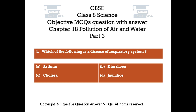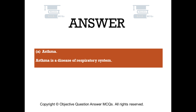Question number 4: Which of the following is a disease of the respiratory system? Option A: asthma, Option B: diarrhea, Option C: cholera, Option D: jaundice. The right answer is Option A: asthma. Asthma is a disease of the respiratory system.